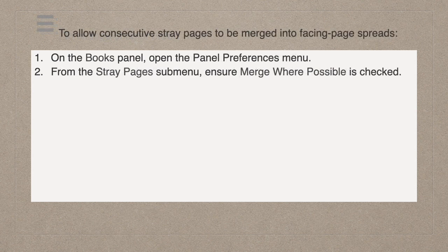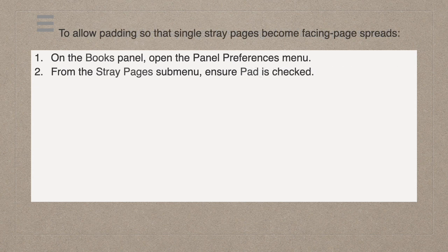To allow consecutive stray pages to be merged into facing page spreads, on the Books panel open the panel preferences menu and from the Stray Pages submenu ensure 'Merge where possible' is checked. To allow padding so that single stray pages become facing page spreads, open the panel preferences menu and from the Stray Pages submenu ensure 'Pad' is checked.